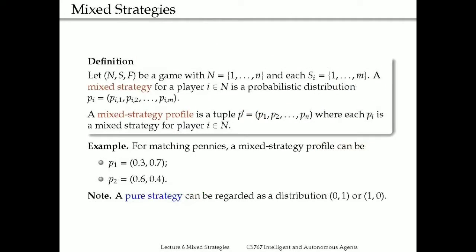Mixed strategies are a mathematical model to represent uncertainty in player decisions. We have a game with N players and each player has their set of actions. A mixed strategy for a player, instead of fixing a concrete action from the set of actions, is a probabilistic distribution defined over the action space of the player. So instead of saying 'I'm definitely going to choose this action,' I'm saying 'I'm going to choose this action with 0.5 probability and the other action with 0.5 probability,' or perhaps 0.2 and 0.8, or if there are more than two actions, I can distribute the probabilities among all of the actions. In this way, a mixed strategy is a generalization of a pure strategy, where a pure strategy can be considered as a mixed strategy where one action has probability one and the others have probability zero.